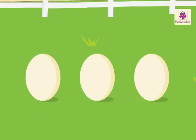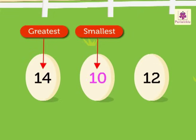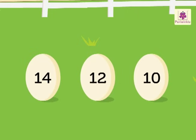Let's arrange 14, 10, 12 in the descending order. Here, the greatest is 14 and smallest is 10. Hence, the descending order is 14, 12, 10.